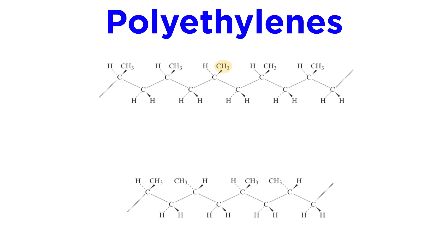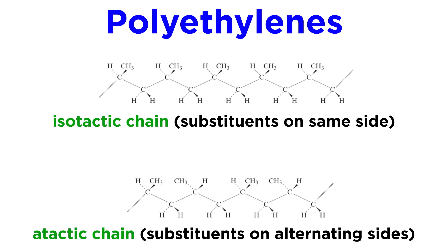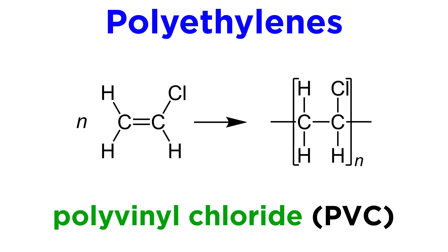With these compounds, if a substituent is present, like a methyl group, this can result in an isotactic chain, where the methyl groups are all on the same side of the molecule, or an atactic chain, where they alternate from one side to the other, as depicted with dash and wedge bonds. If the substituent is a chlorine atom, we get polyvinyl chloride, or PVC.